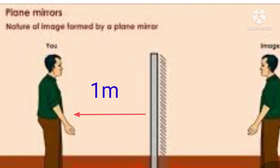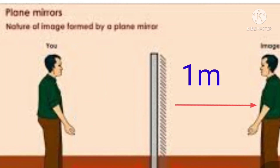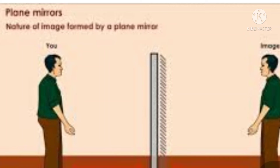If you are standing in front of a mirror at one meter distance, where will the image be formed? The image is also formed one meter from the mirror. The distance between you and the mirror is one meter, and the mirror and the image is one meter. So the distance between you and the image is one plus one — two meters.